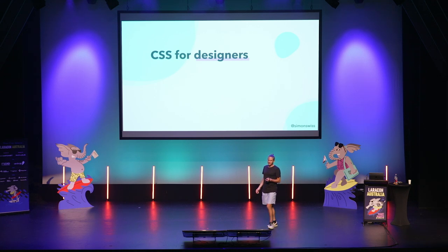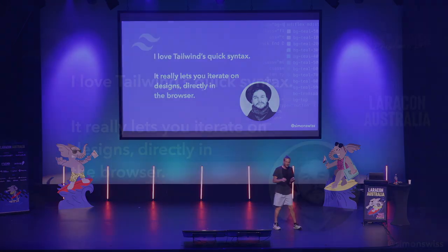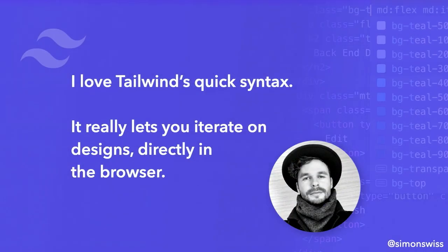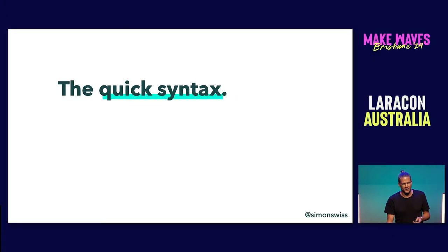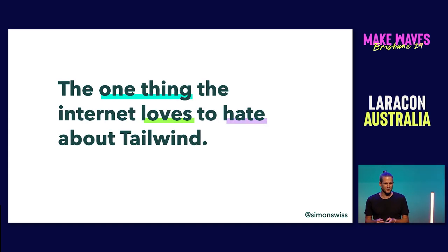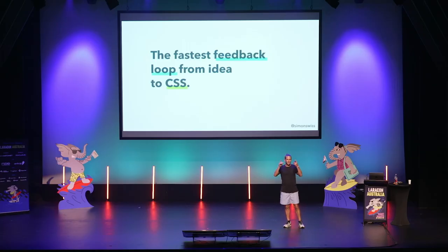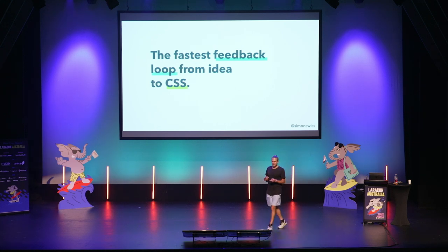Chris told me early on what he loved about Tailwind is the quick syntax — it lets him iterate really quickly in the browser and be super productive. The so-called ugly HTML, the one thing the internet loves to hate about Tailwind — it turns out I believe this is the magic ingredient of Tailwind CSS. Because I think it's the fastest feedback loop from an idea to CSS in the browser. You're visualizing an idea in your head and you see it in the browser through CSS. I don't think any tool gets you there faster.